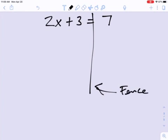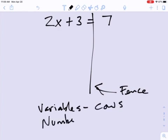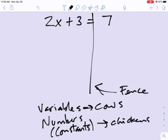If we call this a fence, and I don't know if any of you have been to one, but let's pretend we're on a farm. We're gonna say that any of the variables, we're gonna say those are cows, and then we're gonna say any of the numbers, which are constants—we're gonna use good math vocabulary—are chickens. So we've got cows and we've got chickens.